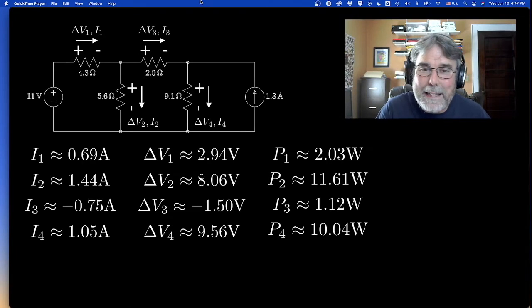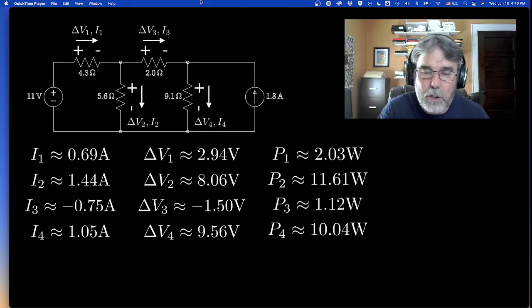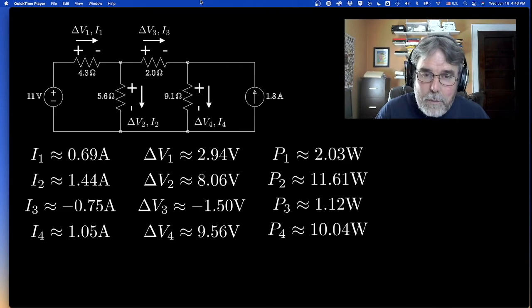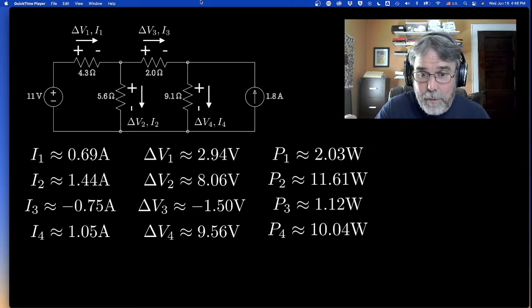The same way with current and the same way with potential. The only way current flows against the potential hill is if there's a power source there, a battery or something, some kind of an active agent that's pushing charge up against the potential. So in the case of the current source, you've got 1.8 amps flowing from zero volts up to 9.56 volts. So it's going to be 1.8 amps times 9.56 volts.